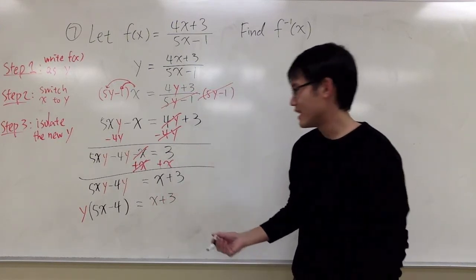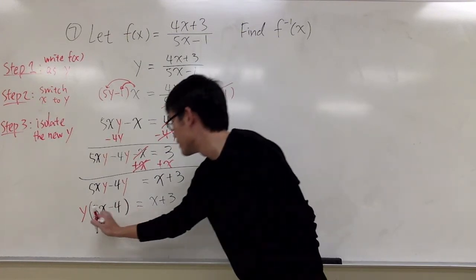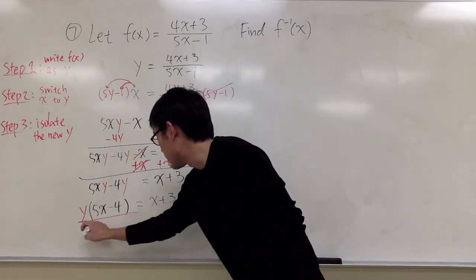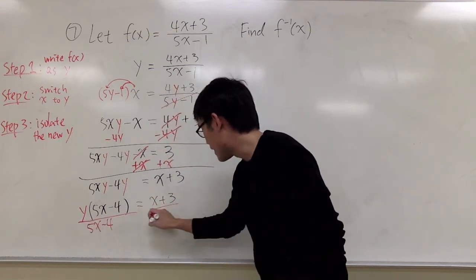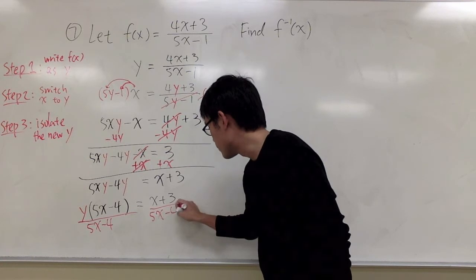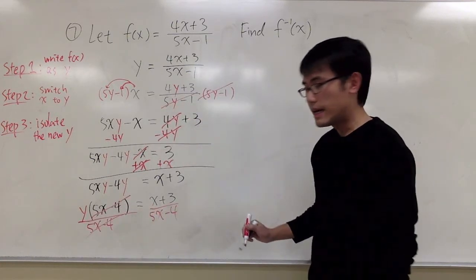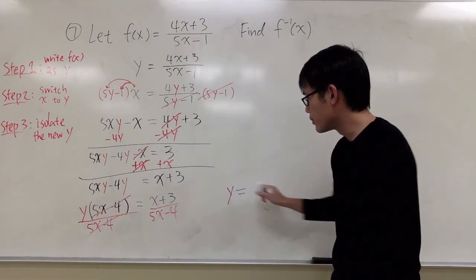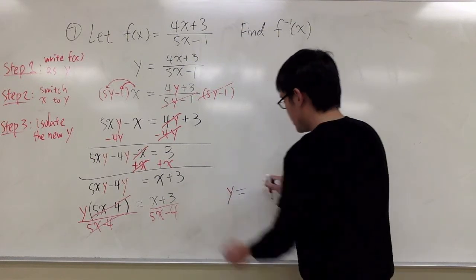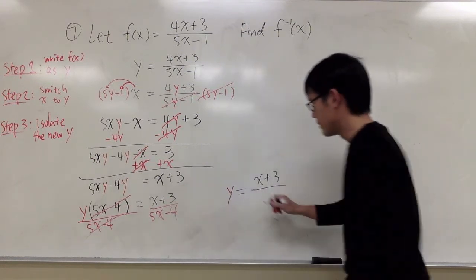And one more step will be done. Let's divide both sides by 5x minus 4. So, you see that divide both sides by 5x minus 4 here, divide this by 5x minus 4 here, this too cancels out. And now we'll just leave with y on the left hand side, that equals to x plus 3 over 5x minus 4.